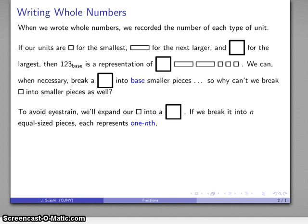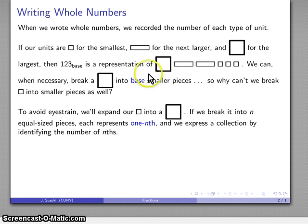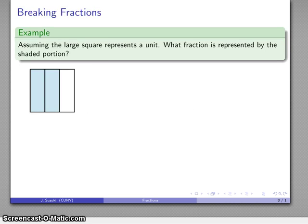Now a couple of terms have to be introduced. If I break this into n smaller pieces, each of the same size, each one of those pieces is going to be called an nth, one nth, whatever n happens to be. And I'm going to express a collection - well, I express this collection by saying how many of each type of piece we have. I have one of these, two of these, three of these. So I write it as 123 in whatever base. And if I have a collection of these smaller pieces, I'm going to tell you how many of those smaller pieces I have.